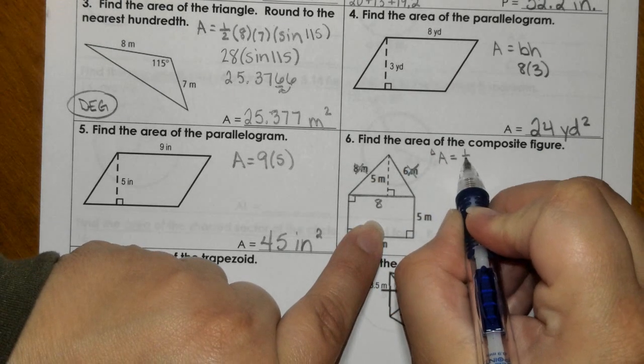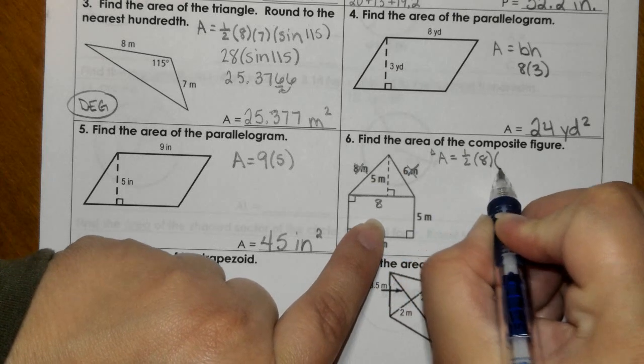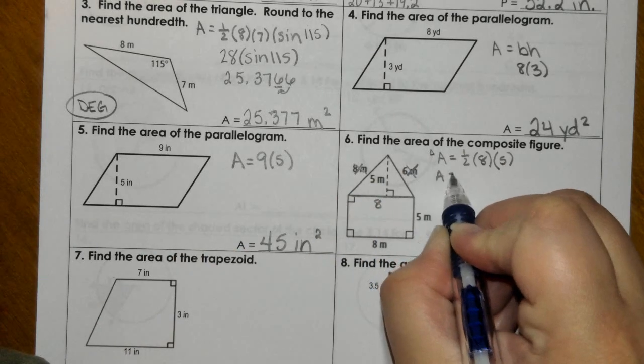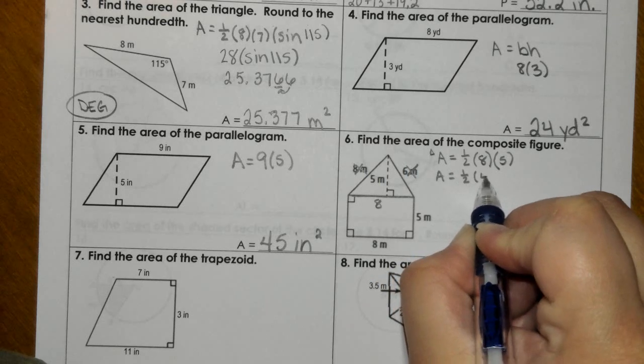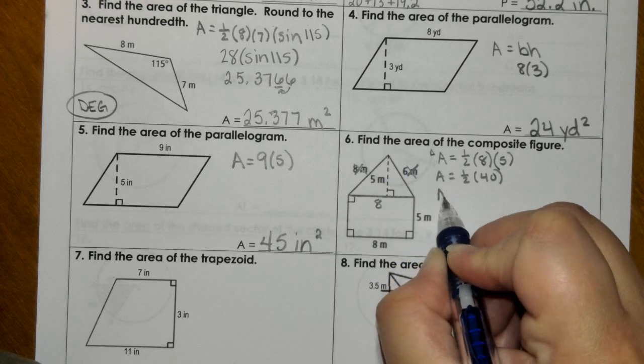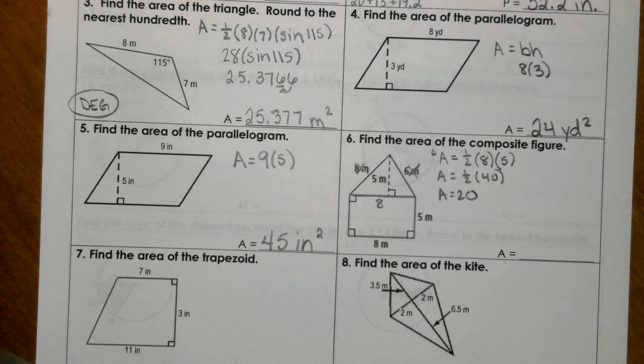So for the triangle, the area of the triangle, we would do one half, base 8, times the height 5. So that would be 40. Take half of that, we get the triangle is 20.